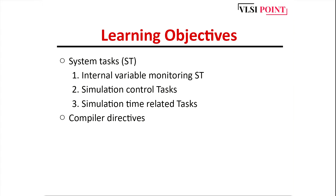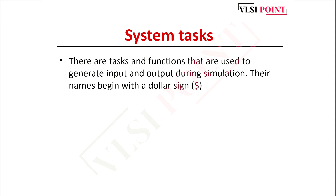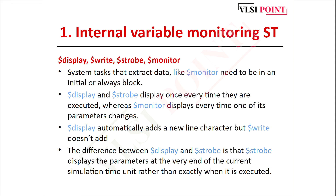Our first topic is system tasks. There are some tasks and functions used to generate input and output during simulation, represented by the dollar sign. The first category is internal variable monitoring system tasks, which includes $display, $monitor, $write, and $strobe. Both $display and $write are used to print messages, but the difference is that $display automatically adds a new line character at the end of its output, whereas $write does not add any new line character.